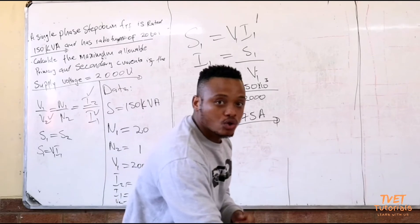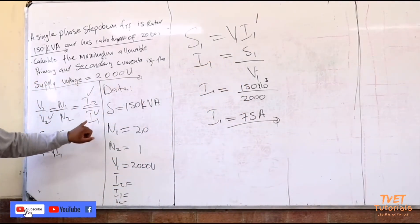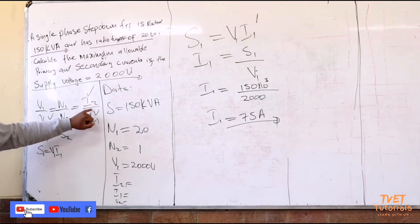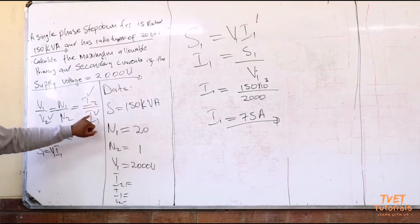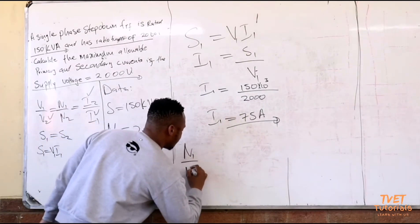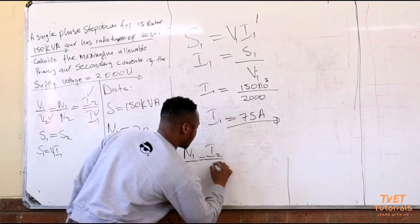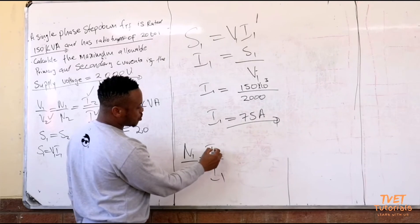Now that I have i1, I will go back to my set of equations. The relationship between i1 and i2, I can say that i1 divided by i2 is equal to n1 divided by n2. I have n1, n2, and i1. Now I need i2. So I will use that n1 over n2 equals i2 over i1.